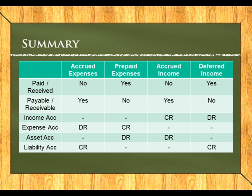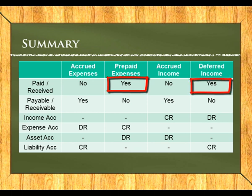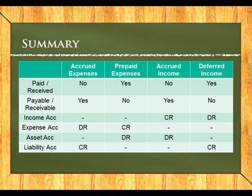A summary table shows how the different adjustments work. Prepaid expenses have been paid and deferred income has been received. Accrued expenses are still payable and accrued income has not yet been received. The table shows how to deal with each — the income account, expense account, asset account, and liability account for each type of adjustment.